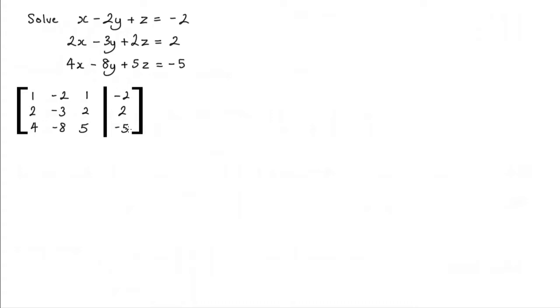Now to find a solution for these three equations, what I want to have is what we call the identity matrix on this left hand side here. Now the identity matrix looks like this. We have a 1, 0, 0, 0, 1, 0, and 0, 0, 1.